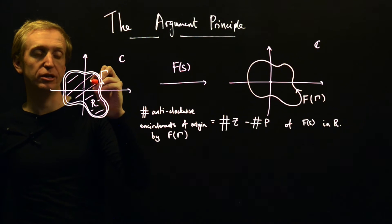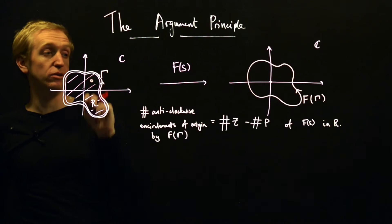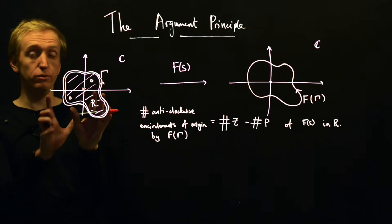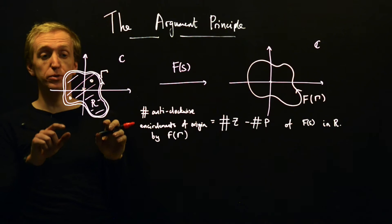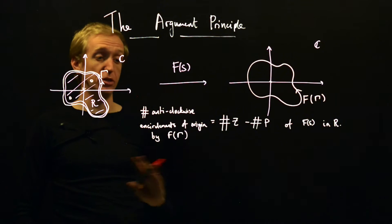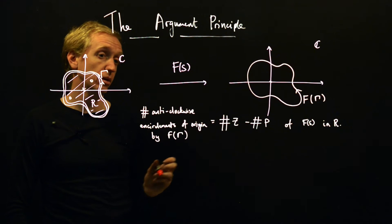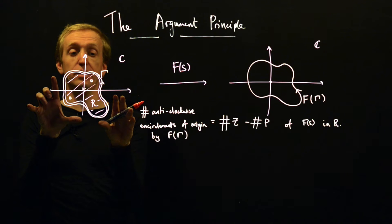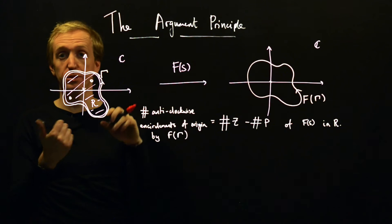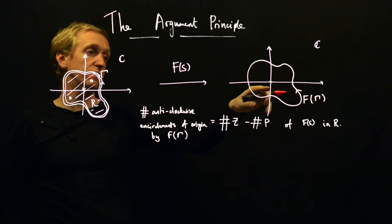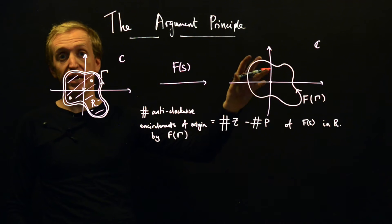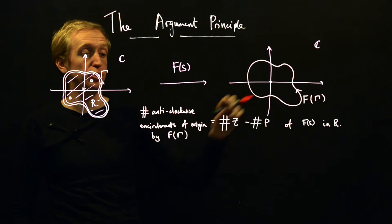We could have one zero, or we could have two zeros, but if we have two zeros then we must have a pole. We don't know where these zeros and poles are, but we know for sure they're in region R. Whatever region R we pick, it defines a new curve gamma, and you might encircle different numbers of poles and zeros of f of s, but then the output contour will change the number of anti-clockwise encirclements it makes of the origin accordingly.